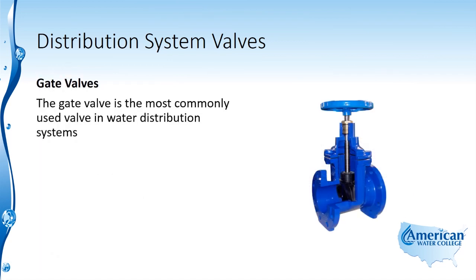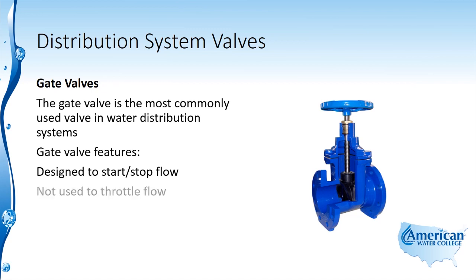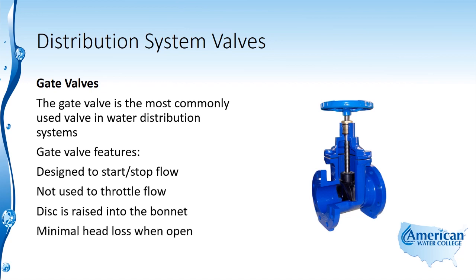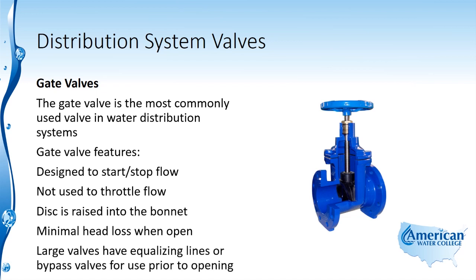The gate valve is the most commonly used valve in water distribution systems. They are designed to start and stop flow and are not used to throttle flow. The disc is raised into the bonnet and there is minimal head loss when the valve is open. Large gate valves have equalizing lines or bypass valves for use prior to opening so that the gate is not damaged.